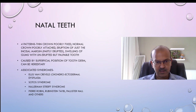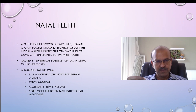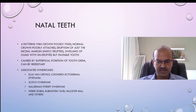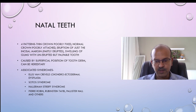Ellis van Creveld is the commonest syndrome associated, though it's very rare — it's chondroectodermal dysplasia where we have a narrow chest wall and natal teeth as well. Sotos syndrome is a form of gigantism, and we have Hallermann-Streiff syndrome, Pierre Robin, Rubinstein-Taybi, and others. But in the majority of cases these babies just have natal teeth with no other association and you don't need to worry.